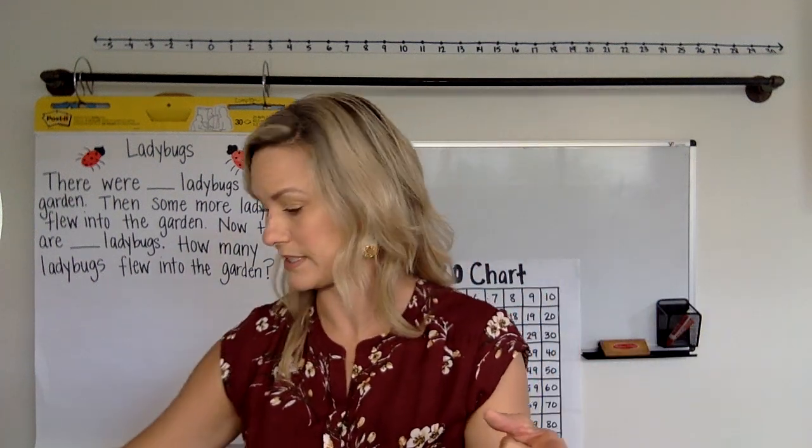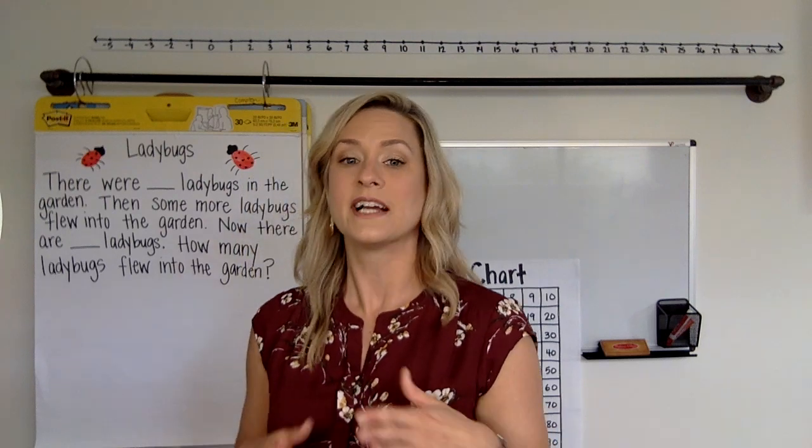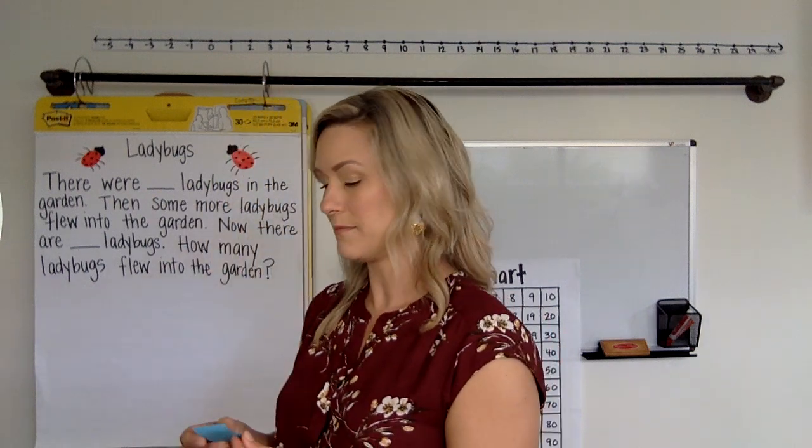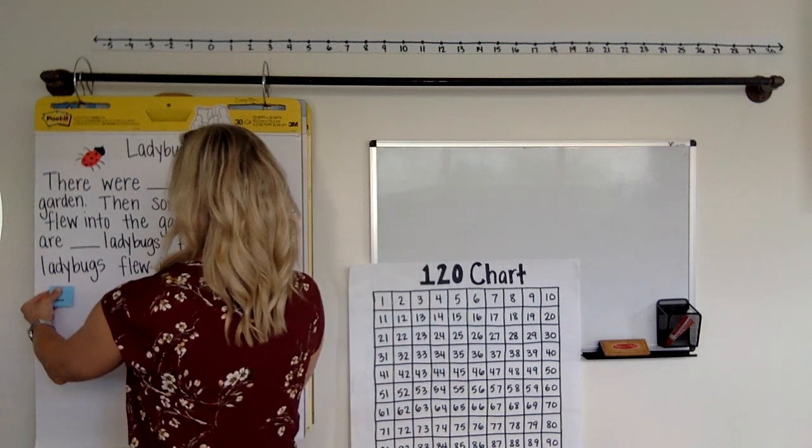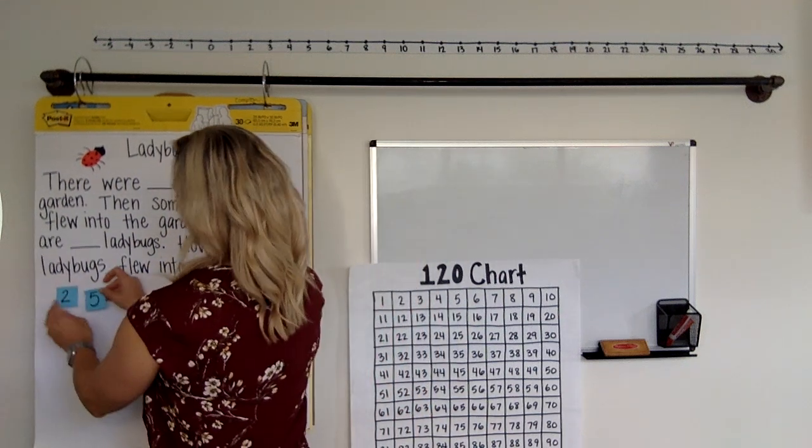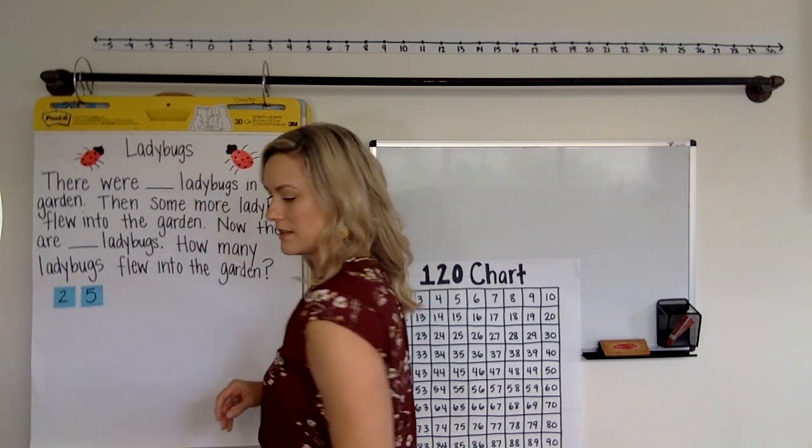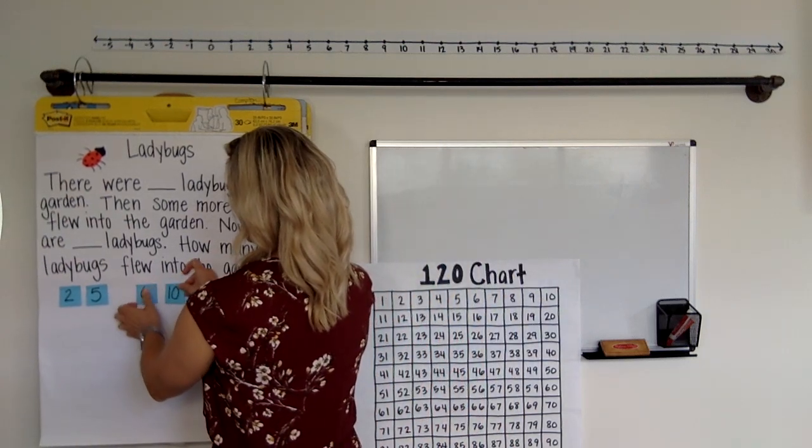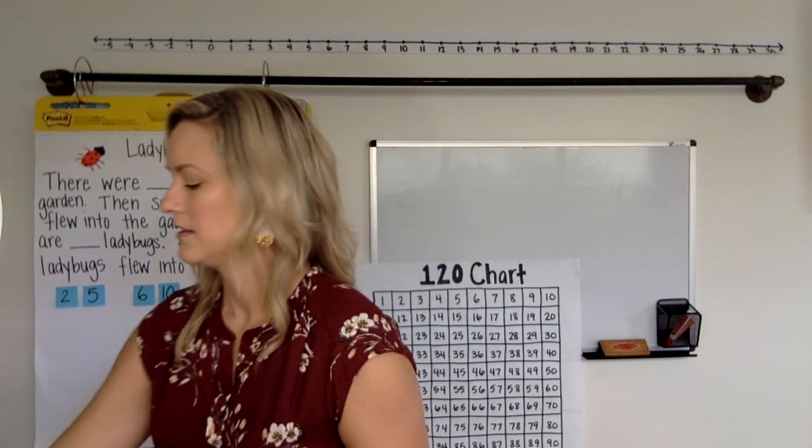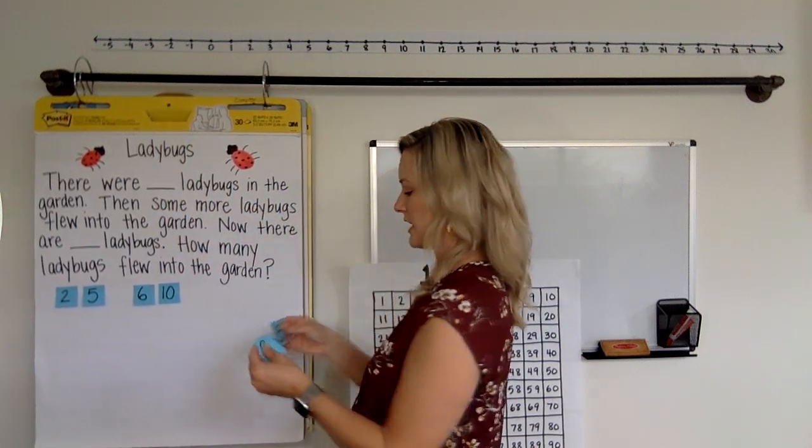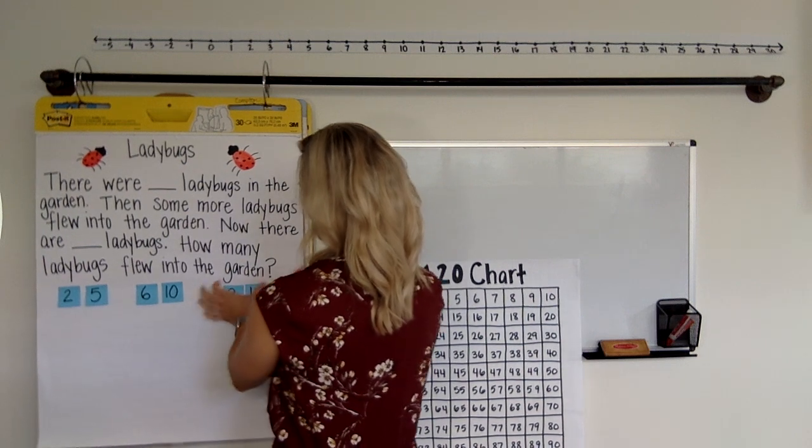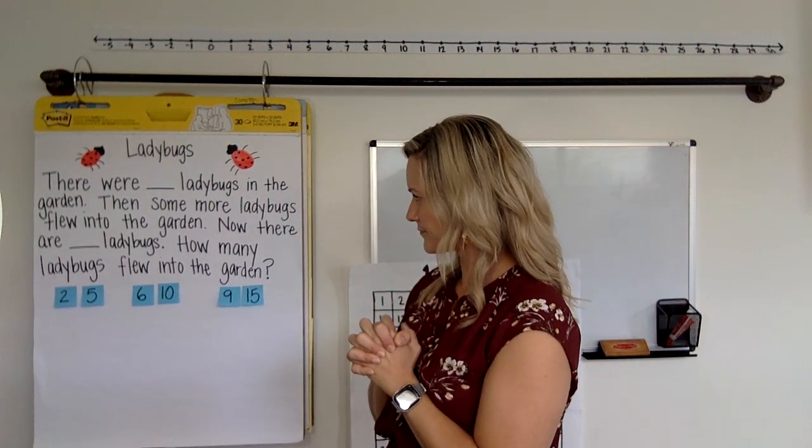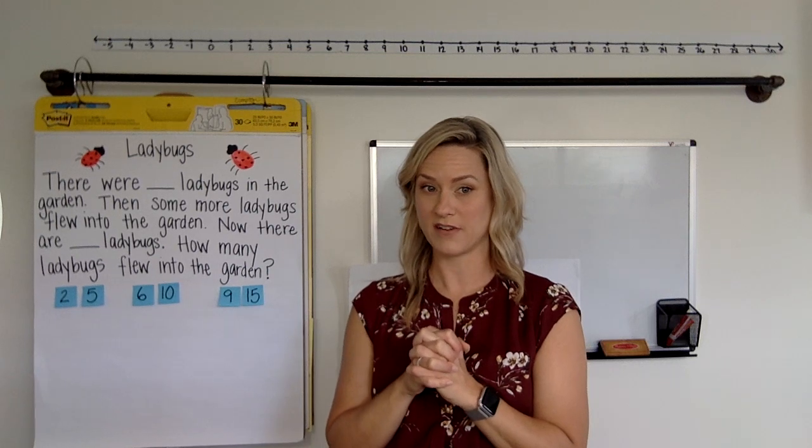All right, here are your number choices. So I want you, just like in class at school, to pick your just right number set. So, I'm going to give you some choices. All right, so your just right number set might be 2 and 5. Or, your just right number set might be 6 and 10. Or, your just right number set might be 9 and 15. All right, so I want you to think, which number set would you want to use? Okay, does everyone have their number set picked up?